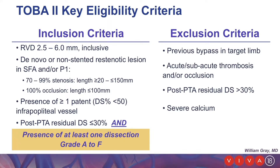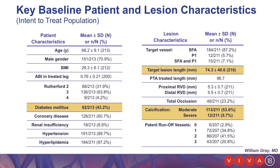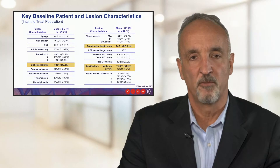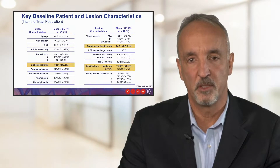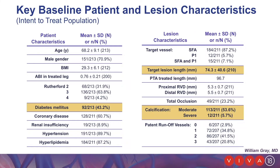The exclusion criteria include: previous bypass in the target limb, acute or subacute thrombosis and/or occlusion, post-PTA residual greater than 30%, and severe calcification. Key baseline patient and lesion characteristics are noteworthy: diabetic patients comprised over 40% of the population; target lesion length was over 7 cm; moderate severity calcification was present in over 50% of patients; and moderate-to-severe calcification was noted in over 60% of patients.